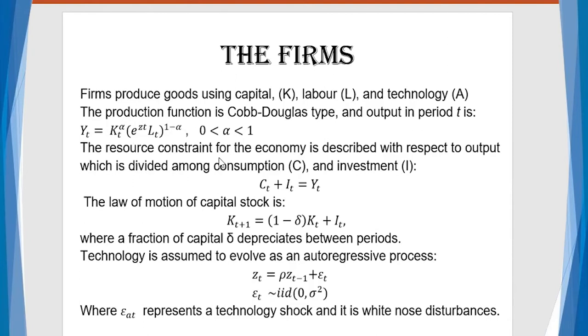The resource constraint for the economy is described with respect to output, which is divided among consumption C and investment I. So you can see you have C_t plus I_t equals Y_t. And then there is a law of motion for capital, which is given as capital in period T plus 1 equals 1 minus delta. Remember, delta is the rate of depreciation of capital plus I_t.